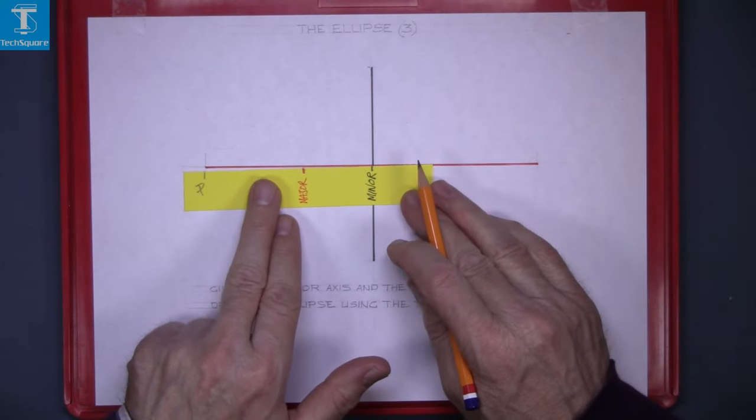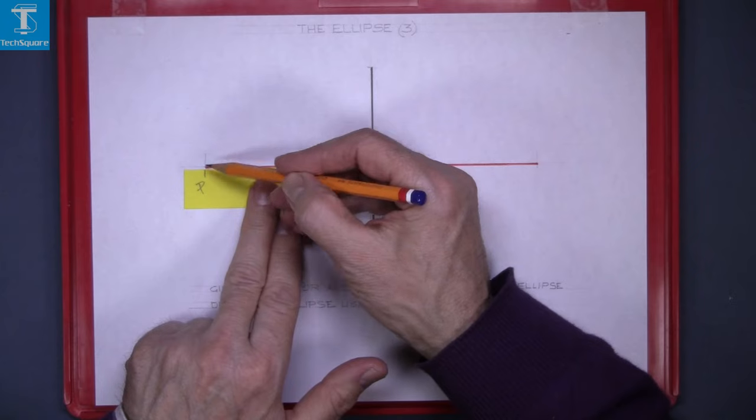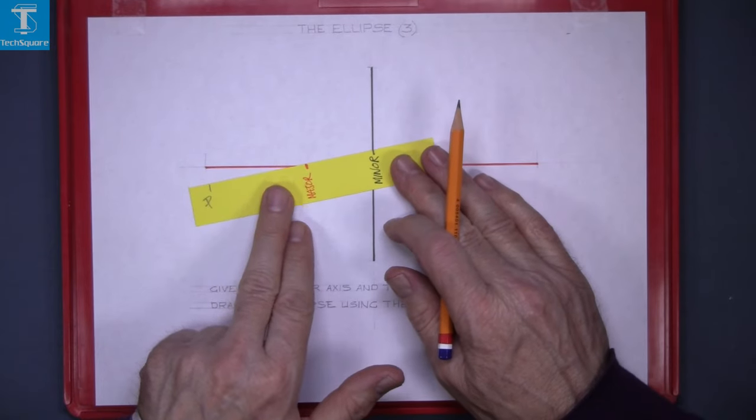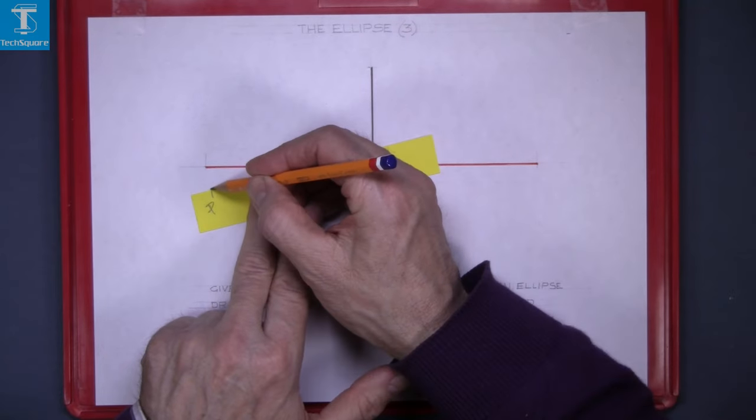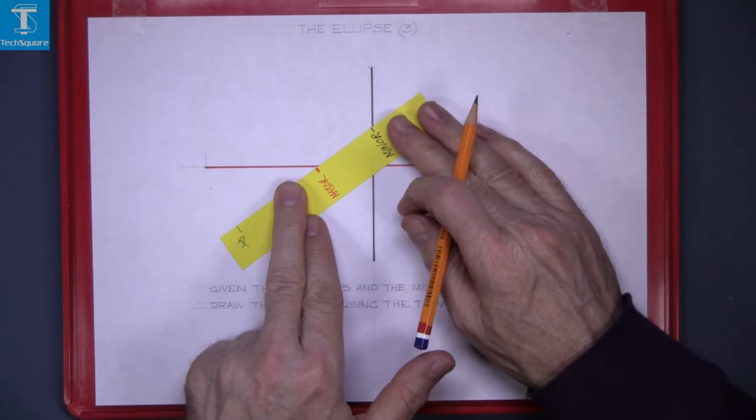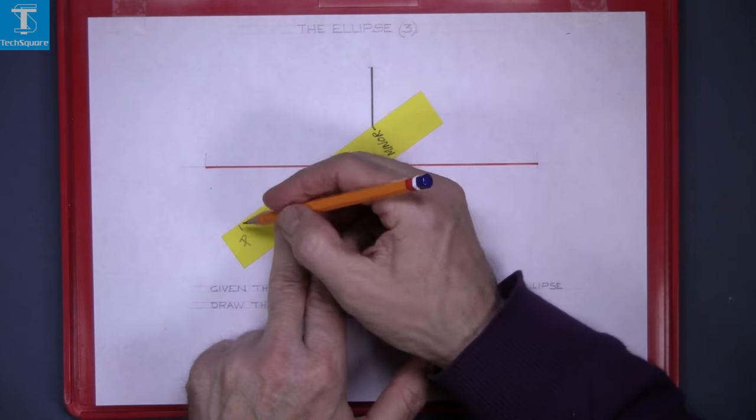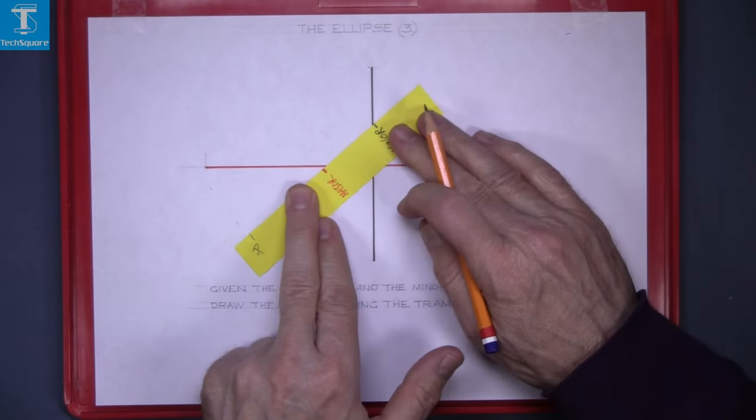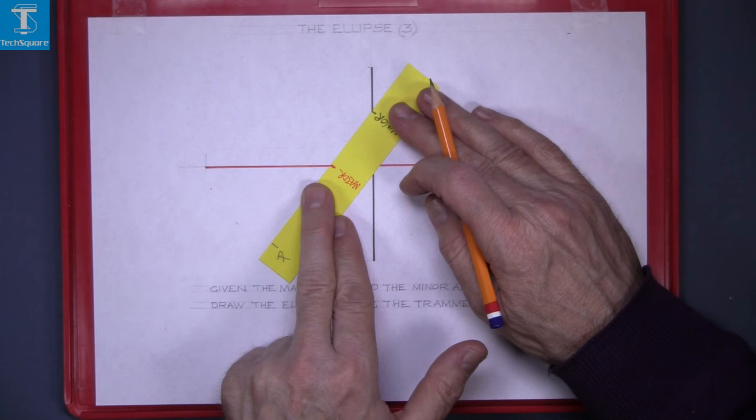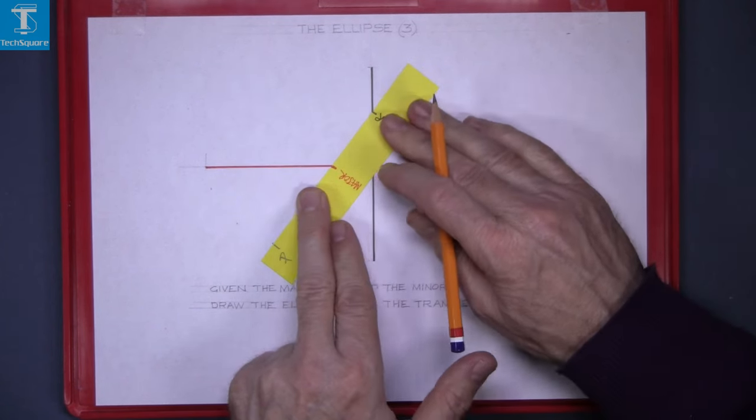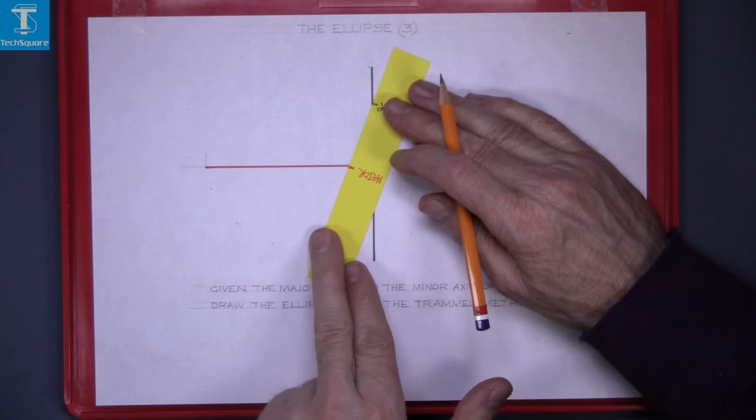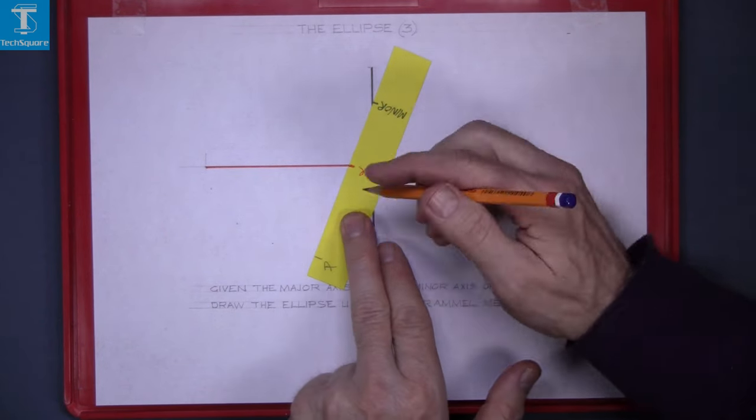So now we're going to mark the points. That's the end of the major axis. Now rotate it to the first position you want. Get the two points on the axes and mark P. Continue doing that for the full circuit of the ellipse.